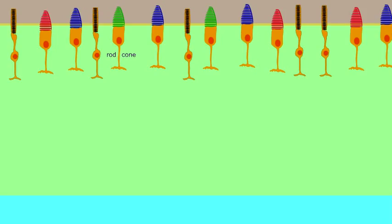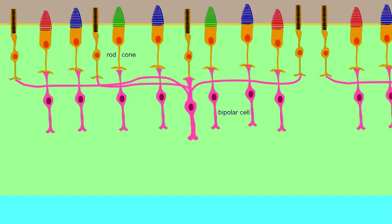these photoreceptor cells synapse with bipolar neurons in the next layer, as well as horizontal cells which can be found here.